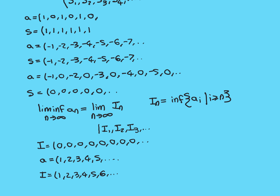Now let's look at an example of a sequence that is bounded below but doesn't have a limit inferior — the reverse of the earlier example that was bounded above but had no limit superior. The sequence is 1, 2, 3, 4, 5, 6, 7, 8, 9, 10, etc. The first term I1 is the infimum of all terms — that's {1, 2, 3, ...}, minimum is 1, so I1 = 1. Then I2 = infimum from the second term onwards = 2, then 3, and so on — you get the exact same sequence back, which is non-convergent. So this is an example of a sequence that doesn't have a limit inferior, but is bounded below.